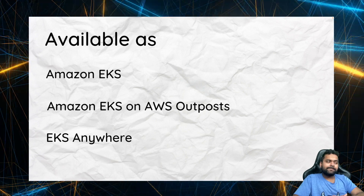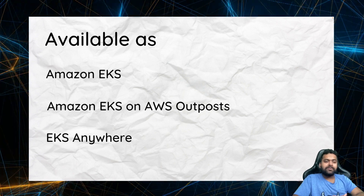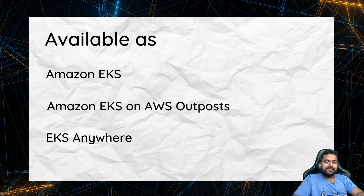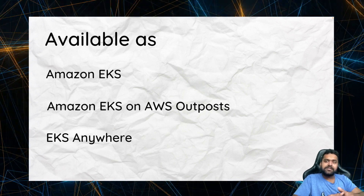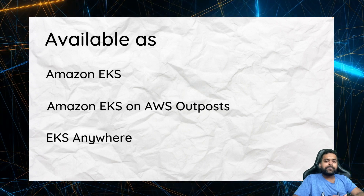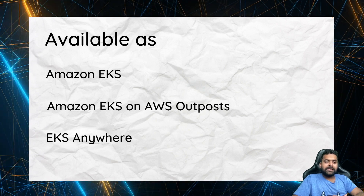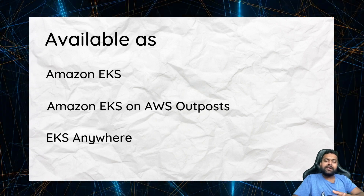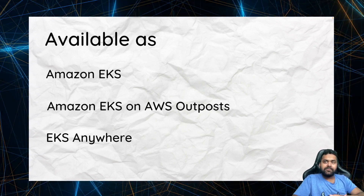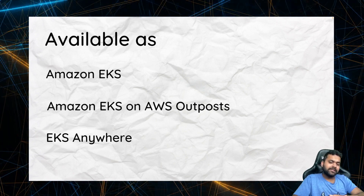The first one is the most widely used: if you are a user of Amazon Cloud, you go into the console, use APIs to create the cluster, and these clusters get deployed onto Amazon hardware in their data centers. The second one is interesting — Amazon EKS on AWS Outpost. AWS Outpost is another offering where Amazon provides their own hardware to the customer and runs Amazon software on that hardware in the customer's environment.